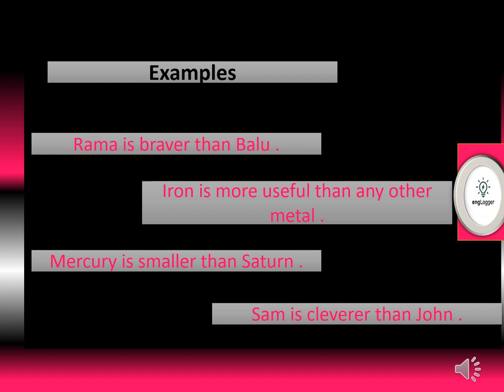Here we have examples of comparative degree: 'braver', 'more useful', 'smaller', 'cleverer'. These are comparative degrees — when we are making comparison between two persons or two things.